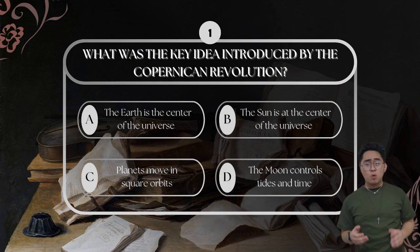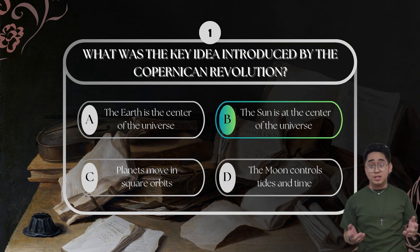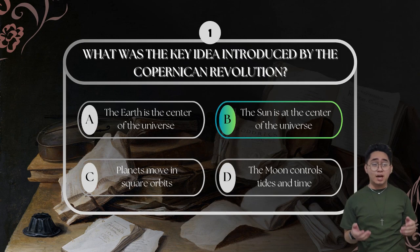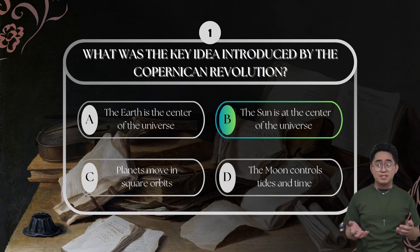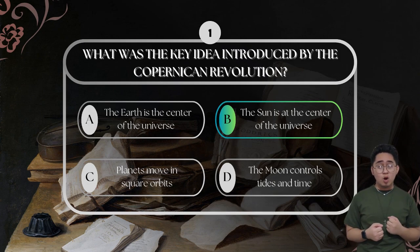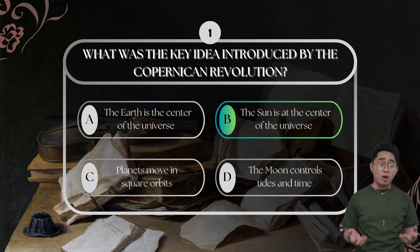For our first question: what was the key idea introduced by the Copernican Revolution? The correct answer is the sun is at the center of the universe. The Copernican Revolution introduced the idea that the sun, not the earth, is at the center of the universe. This heliocentric theory challenged the long-held geocentric belief, where earth was considered the center of everything. Copernicus' model laid the foundation for modern astronomy and sparked further scientific inquiry.